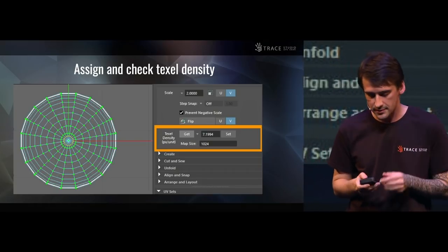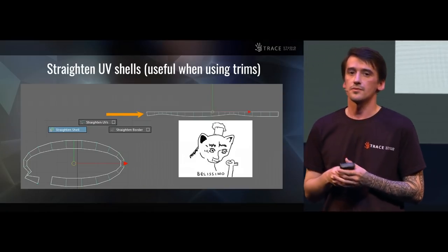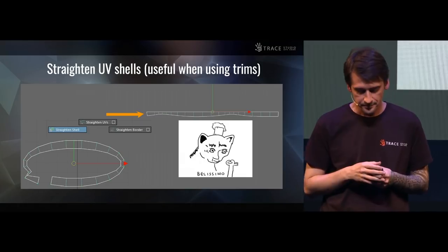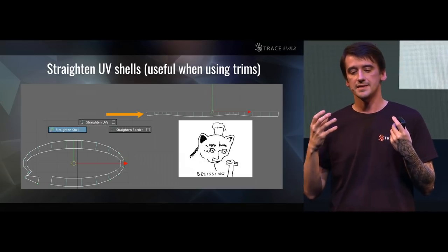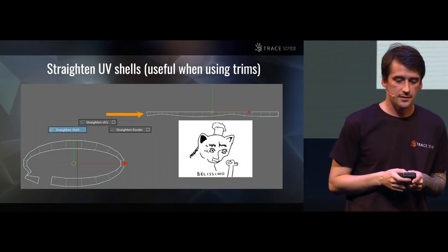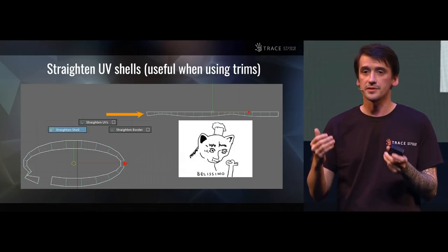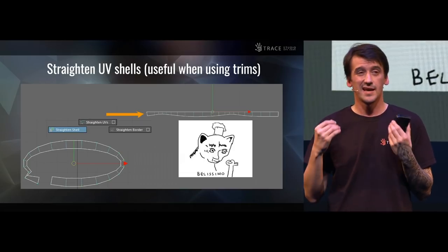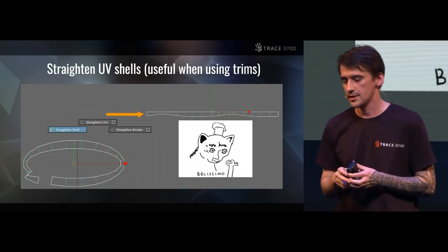Another thing that would be good to have in Blender is straightening UV shells. You would use that a lot in environment assets for games because you will work a lot with trim textures and you will need an easy way to map your UV shells onto trim elements. A third thing that would be good to have is an improved unfolding algorithm. Other industry standard software has good unfolding algorithms that allow you to remove stretching in your UV mapping. Blender has something like that, but it doesn't work as well and the algorithm needs to improve.